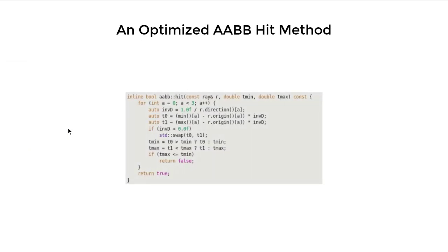Here is a slightly optimized version. Notably, we don't do as much duplicate work when we calculate t0 and t1; instead we use swap to get the final value. This was proposed by someone at Pixar and is apparently more efficient. The C++ standard library has something called std::min and std::max for exactly this purpose, and the whole calculation becomes just one line: auto t0, t1 = min/max of those two.